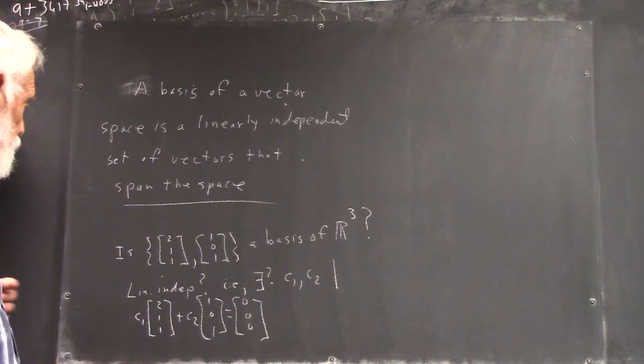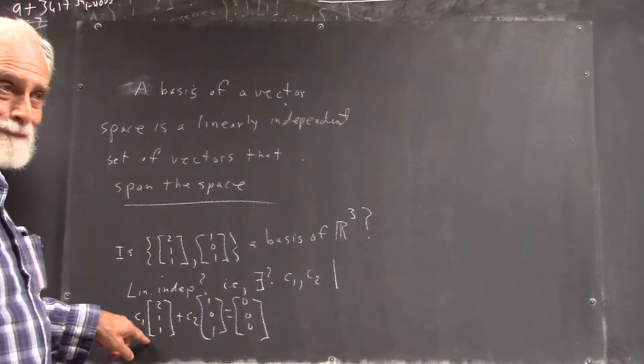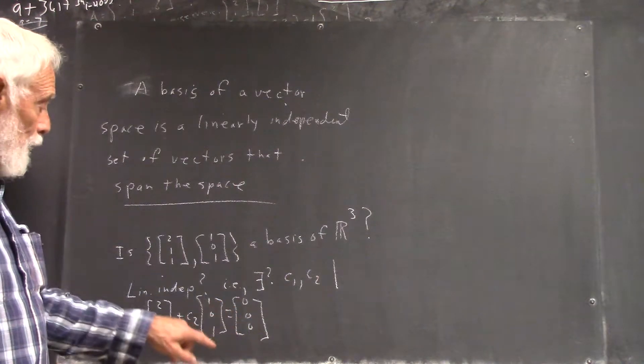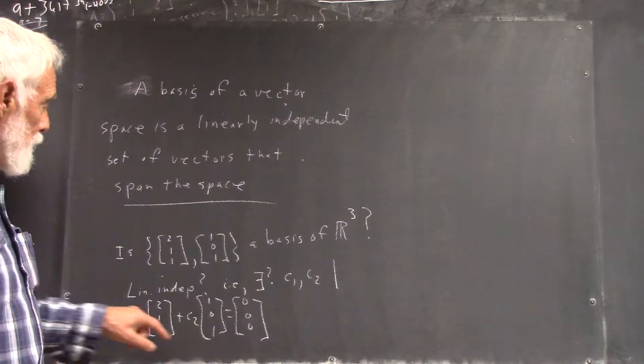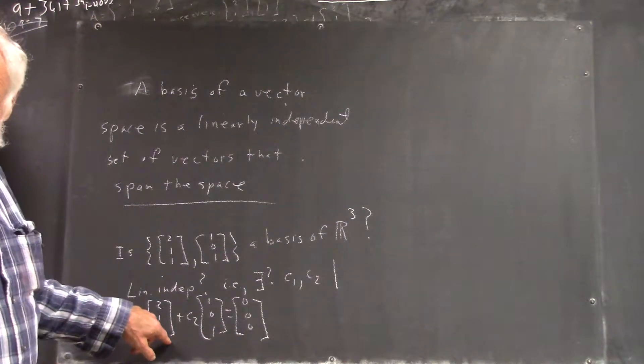And that means, essentially, is this one a multiple of this one? Because if this plus this equals zero, then this one, for example, would be negative c1 over c2 times this one. That make sense?